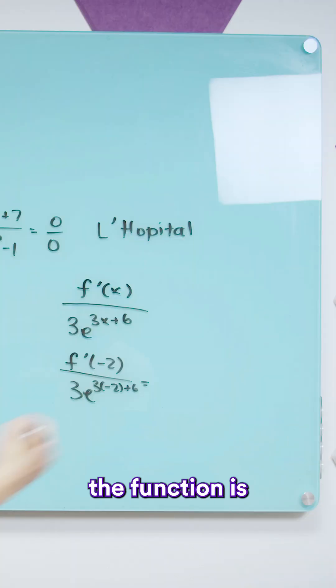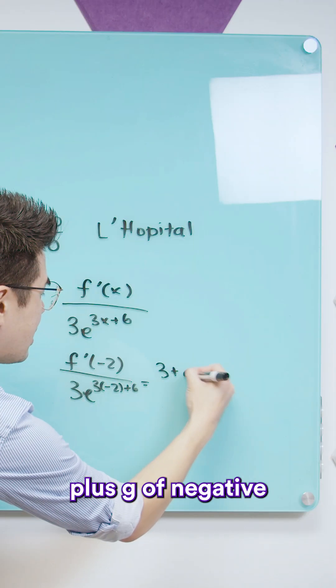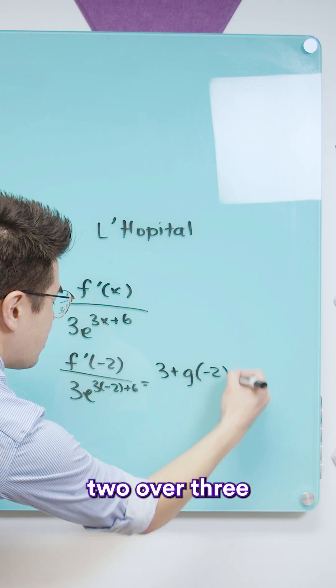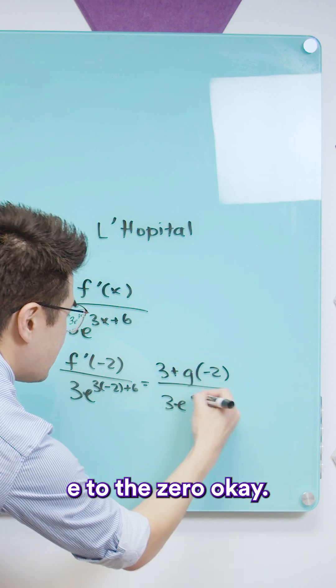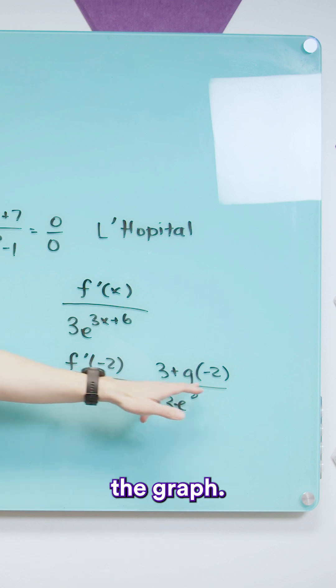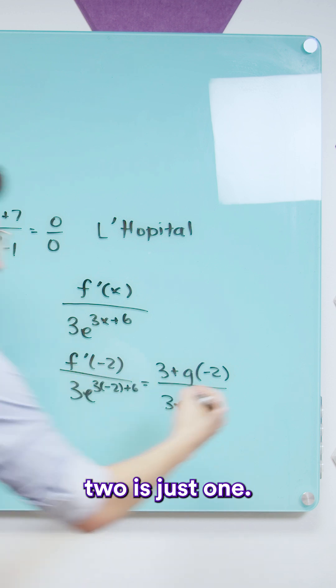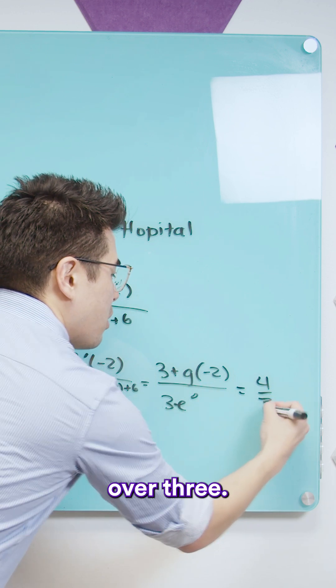Okay so then the function is just going to be 3 plus g of negative 2 over 3 e to the 0. And then this is going to be according to the graph, g of negative 2 is just 1 so my answer is going to be 4 over 3.